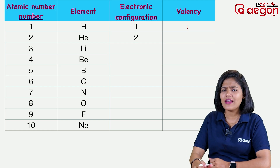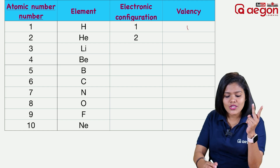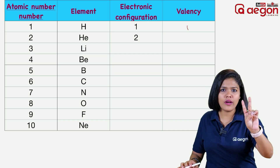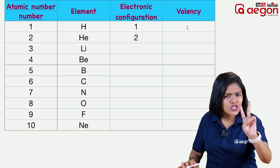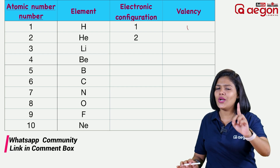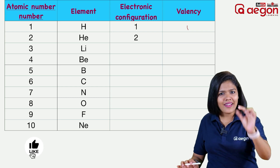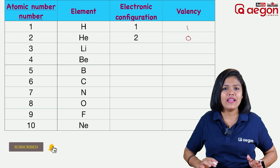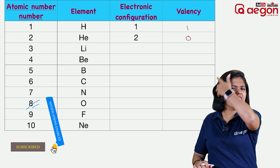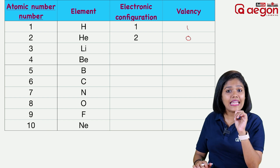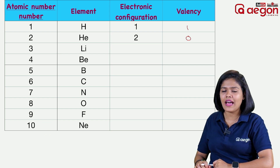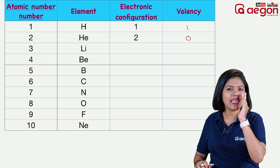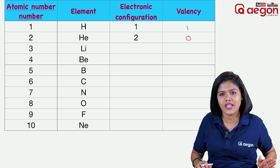Atomic number 2 — helium. The electronic configuration is 2. That shell already has 2 electrons, so this element already has stability. There are 2 electrons already, so the valency is 0. Because there are 2 electrons in one shell — that is a complete electronic configuration.